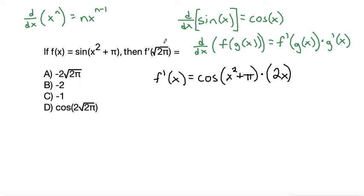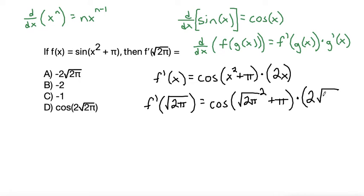But we need to now plug in the square root of 2 pi for our x in our derivative. So the derivative of f plugging in square root of 2 pi into our function makes cosine of, we have the square root of 2 pi, but then we're squaring that plus pi. And then we're multiplying that by 2x, so that would be 2 times root 2 pi.